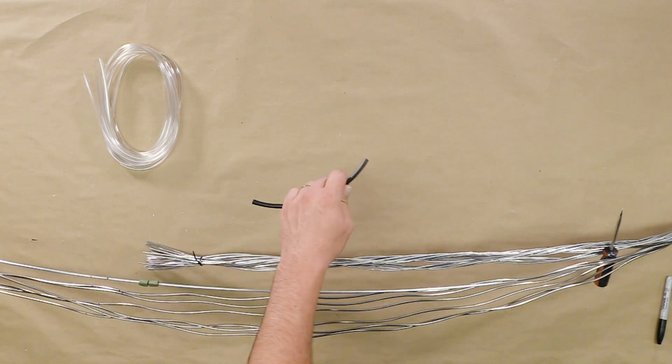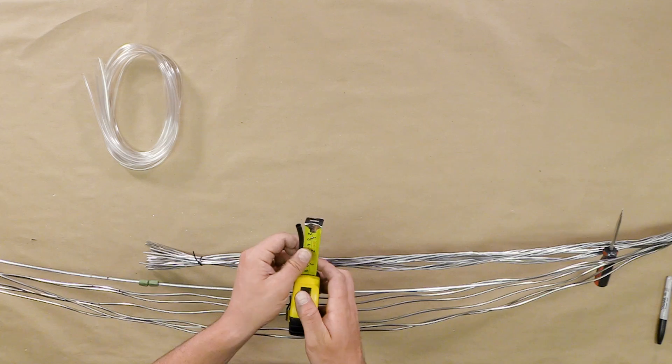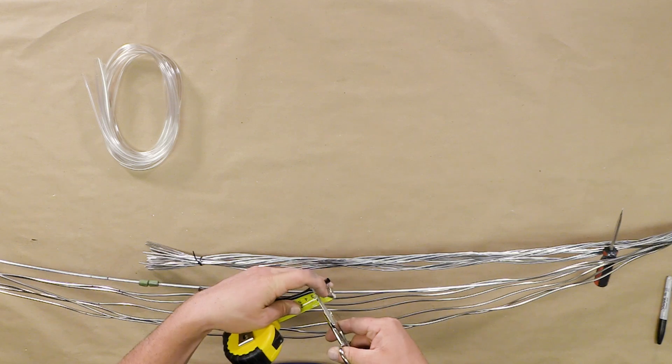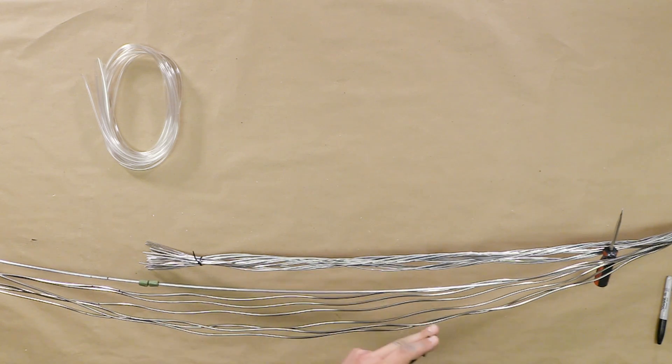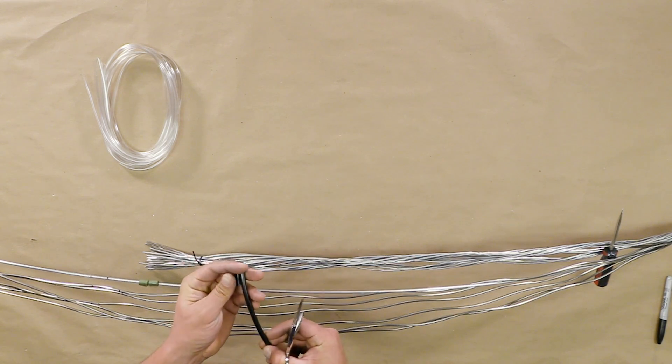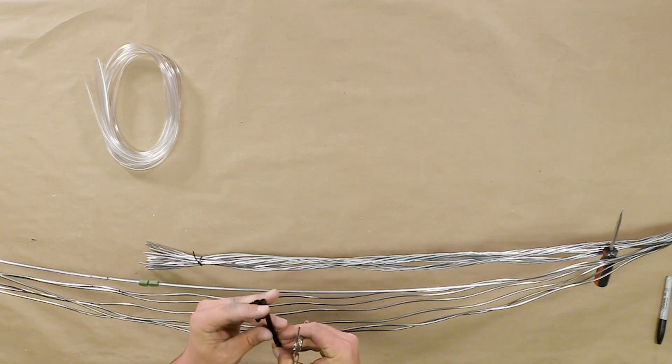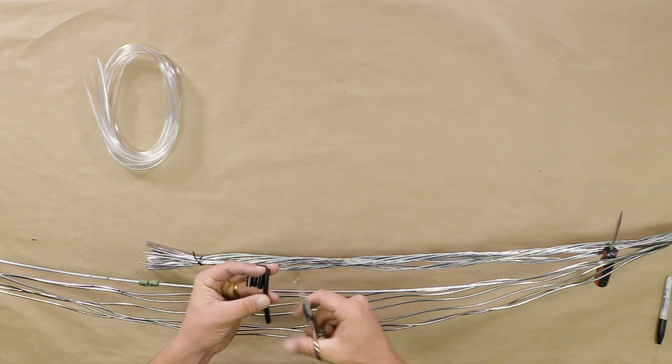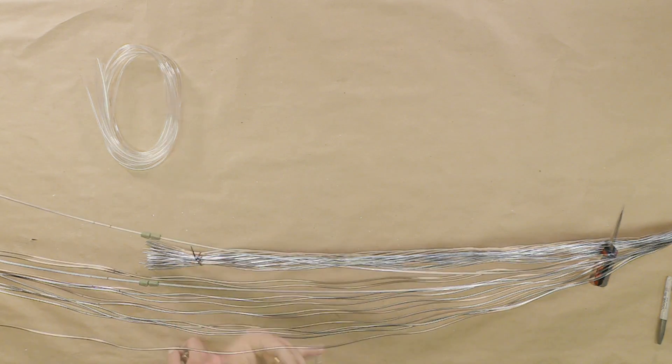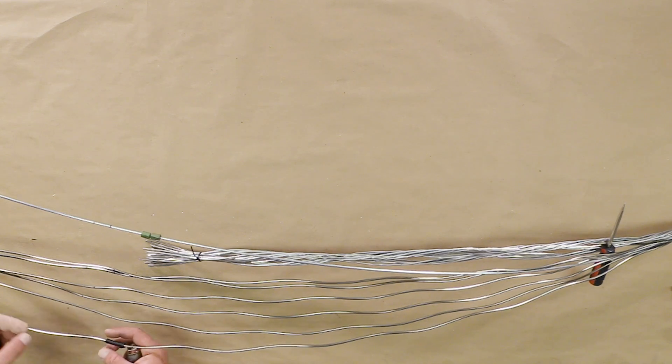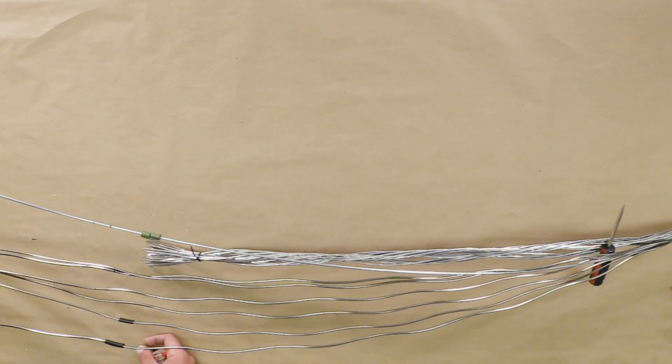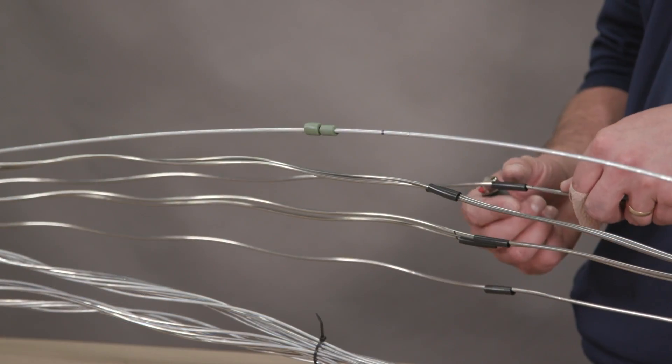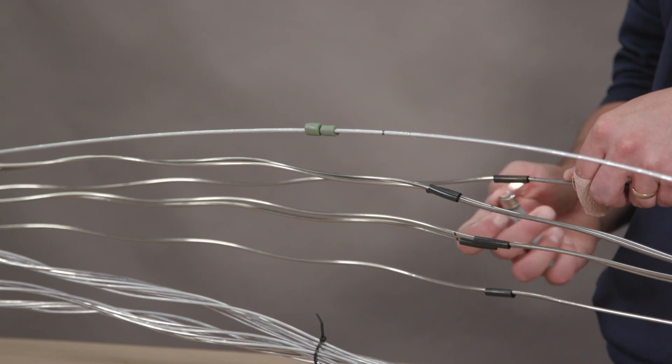Take the black heat shrink tube and cut one inch pieces for each stainless steel buffer tube strand. Slide each heat shrink tube just past the outer mark on each stainless steel buffer tube. Apply heat to shrink until taut on each tube.